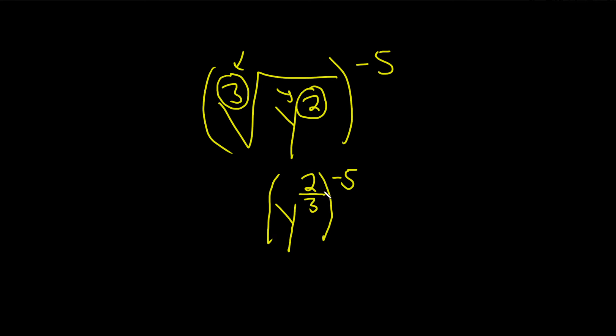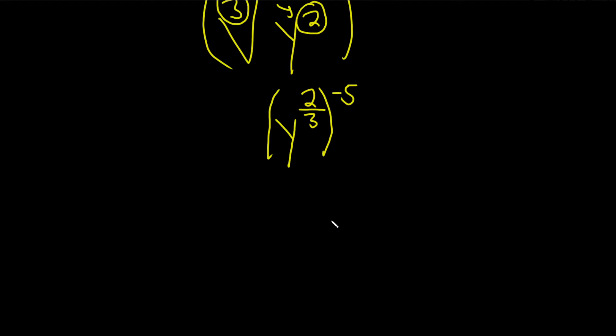And now we can go ahead and use properties of exponents. When you have a variable to a power to a power, you multiply the powers. So you'll take negative 5 and multiply it by 2 thirds. That's going to give us y to the negative 10 thirds.